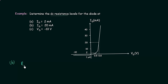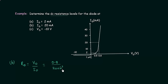For case B, Rd is equal to Vd by Id. When Id is 20mA, we can see from the characteristic that Vd is equal to 0.8V. So Rd equals 0.8V divided by 20 times 10 to the power minus 3 amps, which gives us 40 ohms. This is the value of DC resistance for case B.